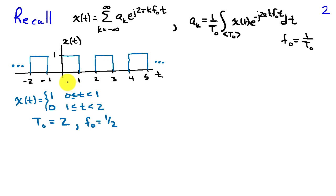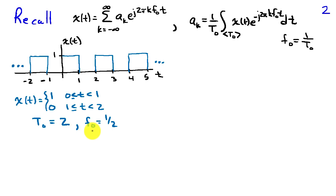Here I've sketched a square wave that takes on the value of 1 for times 0 to 1 and then it's 0 between 1 and 2. This is a periodic signal. Its fundamental period is T-naught equals 2 and therefore it has a fundamental frequency of one half. One period of the signal x of t equals 1 when t is between 0 and 1, and 0 for t between 1 and 2.